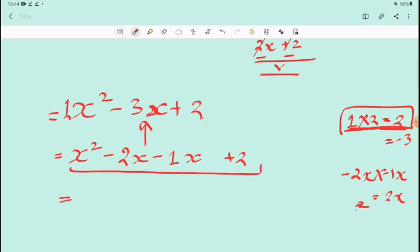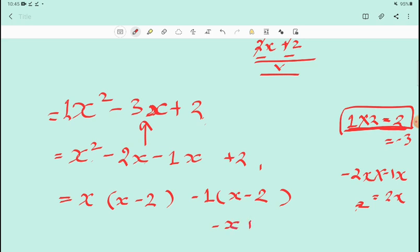Now what do we do? We take x common from the first part and put it in brackets. Take x common: x(x - 2). Then we have (x - 2). Now what remains? We write x - 2 as it is first. This is x - 2. Now see, this was plus, but we wrote it as minus, so we put a minus sign outside. Because this becomes -x, and inside we have +2.